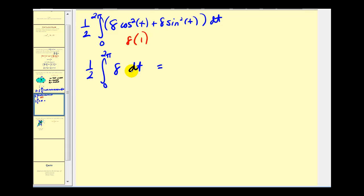This is going to be eight t times one-half, that's four t. So we're going to have four times two pi, that's eight pi, minus zero. So the area of that ellipse would be eight pi.